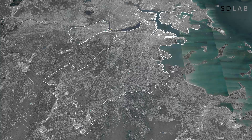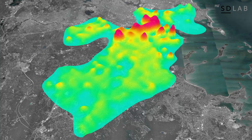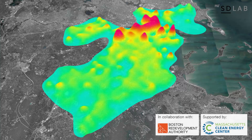In order to plan for a more resource-efficient built environment, we need to understand the patterns of how buildings consume energy in our cities. To address that goal, the Sustainable Design Lab at MIT has developed a citywide building energy model for Boston, working in collaboration with the Boston Redevelopment Authority and MIT Lincoln Laboratory with funding from the Massachusetts Clean Energy Center.